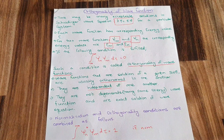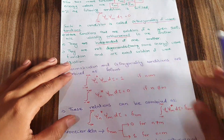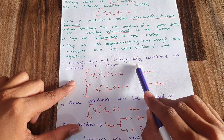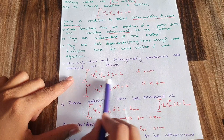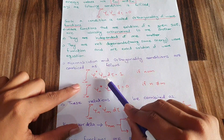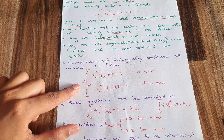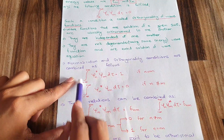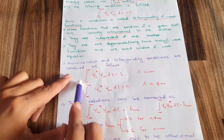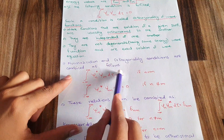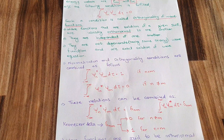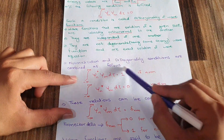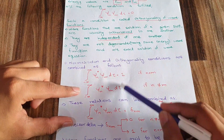If I combine the normalization and orthogonality conditions, the equation is as follows: the integral from minus infinity to positive infinity of ψ_n* · ψ_m dτ equals one when n equals m (normalization), and equals zero when n ≠ m (orthogonality). The only difference is that normalization gives an answer of one, whereas orthogonality gives an answer of zero.